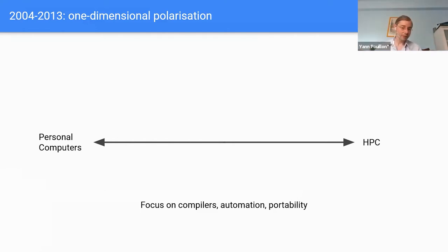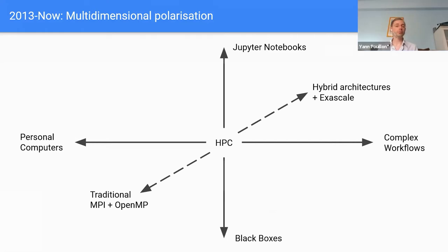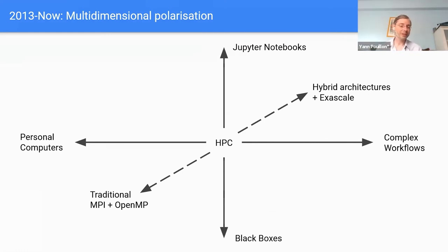This gave us the possibility to focus on other challenges at the time — compilers, automation, portability, et cetera. But then things started to become multidimensional. That first linear axis is now just one small part of a quadrant of something much larger. I've represented here three major dimensions.